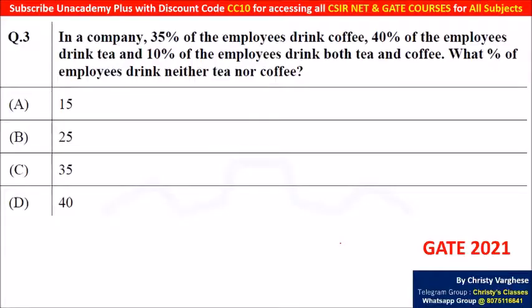So the question reads like this: in a company, 35% of the employees drink coffee, 40% of the employees drink tea, and 10% of the employees drink both tea and coffee.